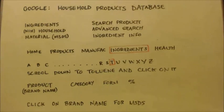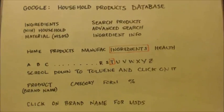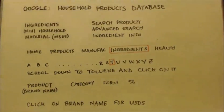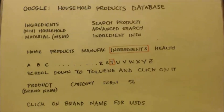So you click on the Household Products Database and you'll see this next thing — the home page. It shows: home, products, manufacturers, ingredients. That's the home page. You click on 'ingredients.'